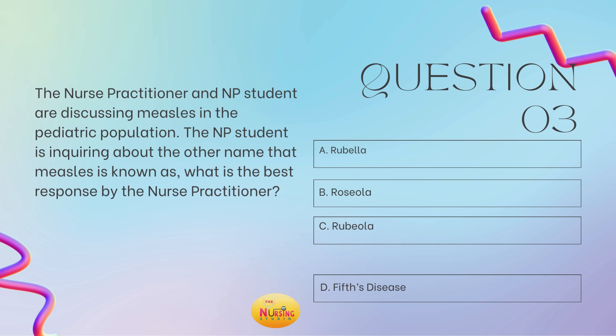And lastly, the nurse practitioner and NP student are discussing measles in the pediatric population. The NP student is inquiring about the other names that measles is known as. What is the best response by the nurse practitioner? Is it A, rubella? B, roseola? C, rubeola? Or D, fifth disease? You should think to yourself: which one is also known as measles? And you should think rubeola — rubeola is also called measles. So your best answer is C.